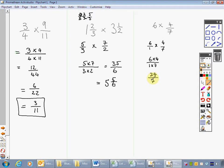1 7 is 7. So it's 24 over 7. How many 7's in 24? Well, in 21 there are 3. And that would be 3 remaining. So 3 and 3 sevenths. That's it for multiplying fractions. Fairly straightforward. I'm going to move on now to talk about division of fractions.